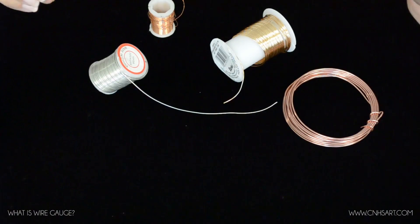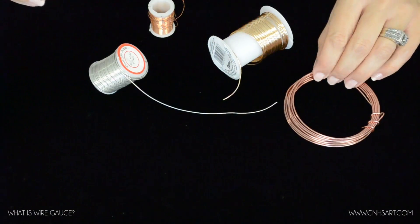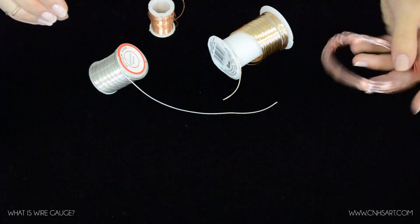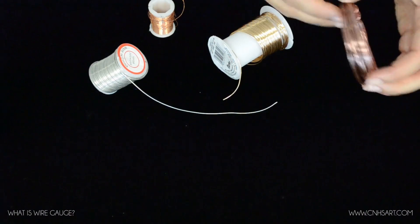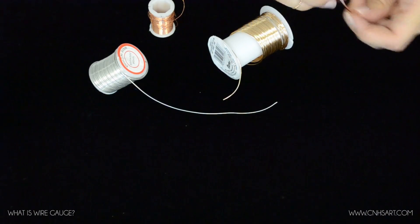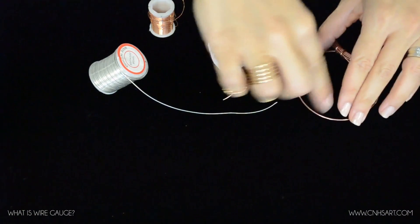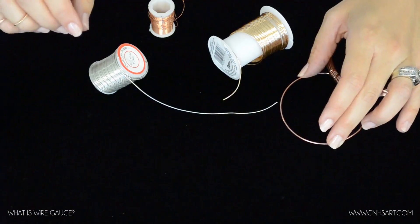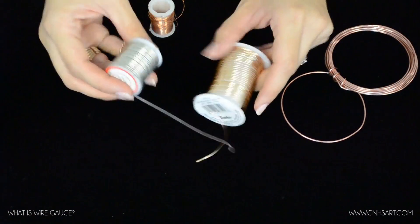So this wire here is actually 16 gauge wire and it is really thick, really large. When it comes to the diameter, this next wire, this gold and silver here, these are 20 gauge wire and it gets smaller.